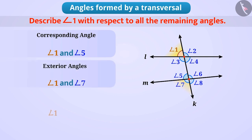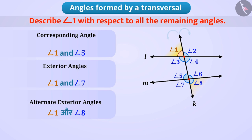If we talk about angle 1 and angle 8, both are exterior angles but are on the opposite sides of the transversal. So, they form a pair of alternate exterior angles. Similarly, can you find out the relation between angle 1 and angle 6? Discuss with your friends and teacher and find out the answer and the reason behind it. Also, try to describe the other angles with respect to the remaining angles.